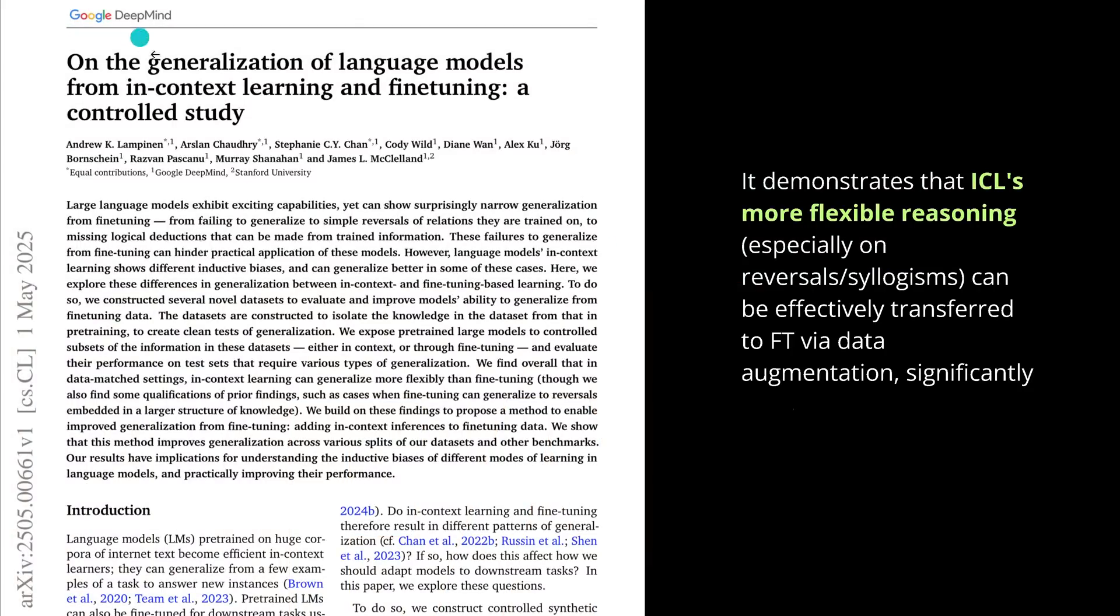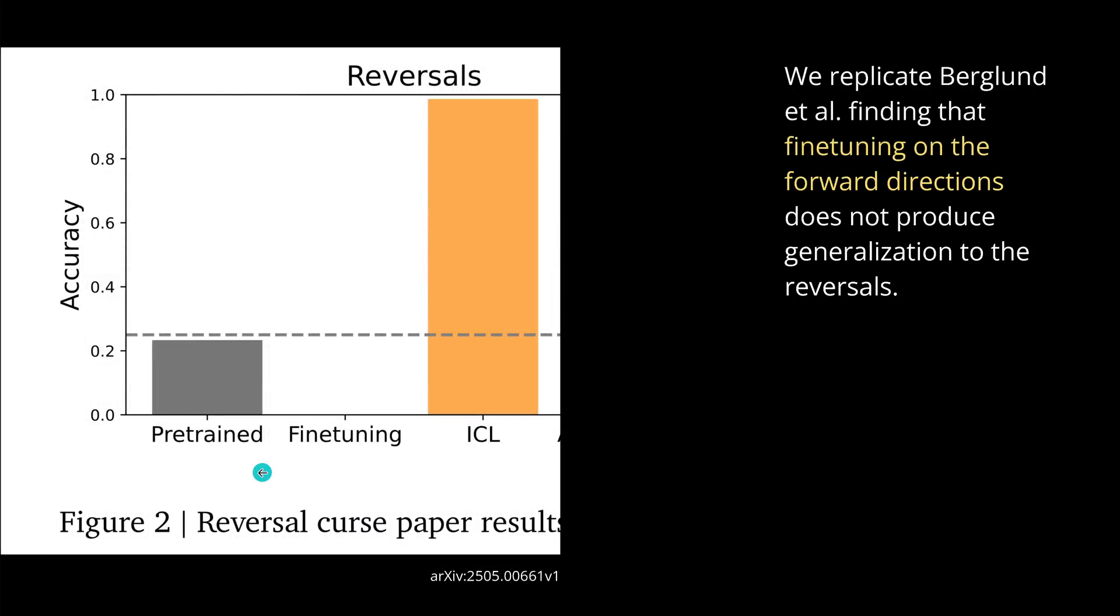So, let's have a look at the new study. This is here by Google DeepMind and Stanford University. From May 2025 on the generalization of LLM from in-context learning and fine-tuning control study. And they demonstrate here that in-context learning's more flexible reasoning, especially on the reversal on syllogism that we need for reasoning, logic can be effectively transferred to fine-tuning via a simple data augmentation, significantly boosting here the fine-tuning robustness of our system. And this is great because, you know what, what we had until now, okay, pre-trained, yeah, beautiful. And then for reversals only, the fine-tuning, zero, zero percent performance, zero percent accuracy. It was not able to do with the classical fine-tuning data set a reversal.